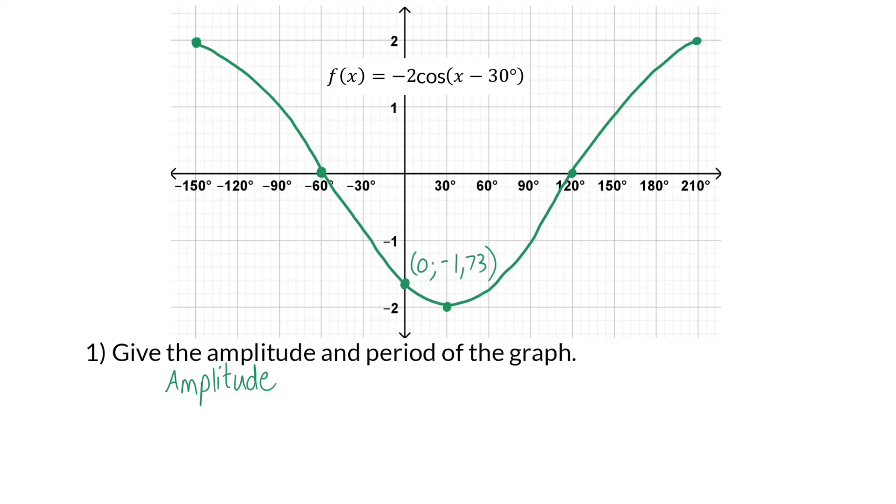By now you should know that the amplitude is indicated by the constant value in front of the equation, or it can also be determined reading the maximum displacement from the resting position or the midline on the graph itself. And here that value is 2, because if you look at the graph, the midline is the x-axis, and from there the maximum displacement up as well as down is 2 units. It still takes this graph 360 degrees to complete one full wavelength, so the period is 360 degrees.